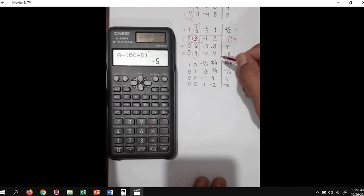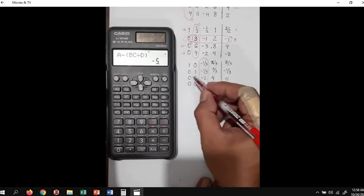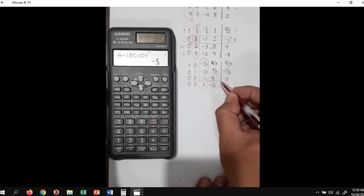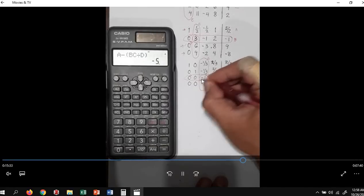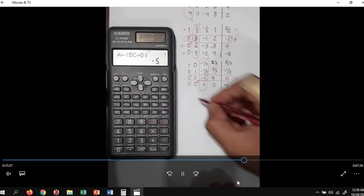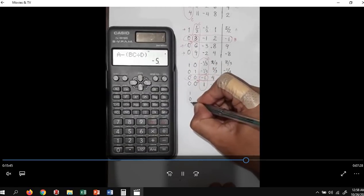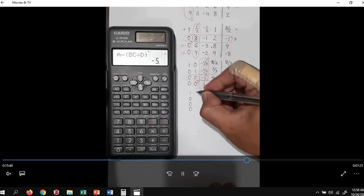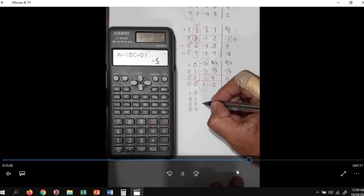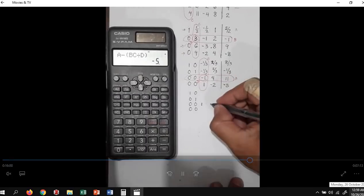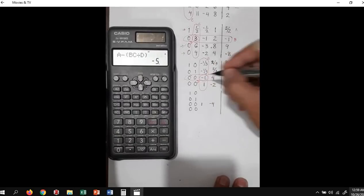Next, third column and third row, targeting the diagonal element. In order to make this value equal to 1, we simply divide this with this number. We'll first copy the first two columns: 1, 0, 0, 0; and 0, 1, 0, 0. We start here: negative 1 divided by negative 1 is 1. 4 divided by negative 1 is negative 4. And 11 divided by negative 1 is 11.